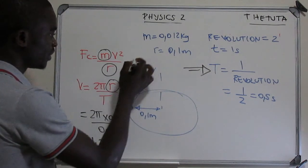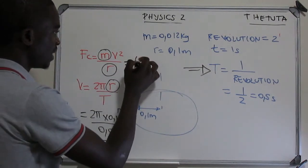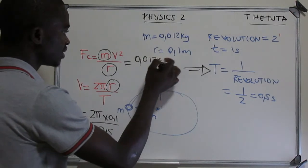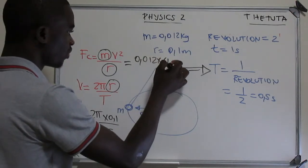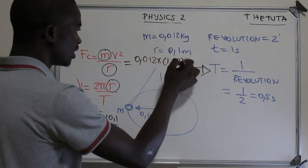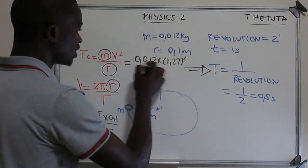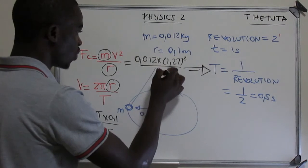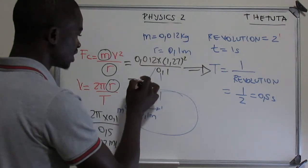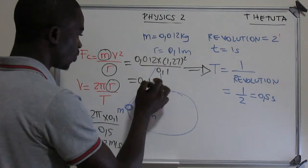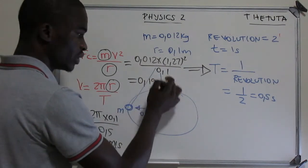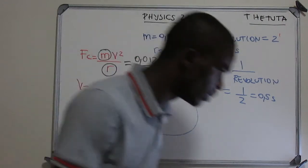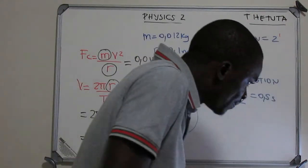After getting the speed, I can now apply the centripetal force formula: mass is 0.012, times the speed 1.27 squared, divided by the radius 0.1. This gives us 0.19 Newtons.